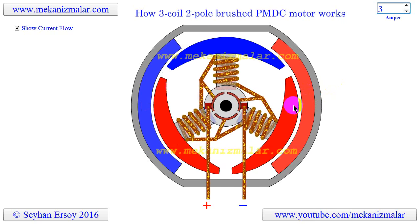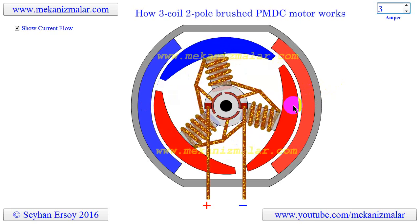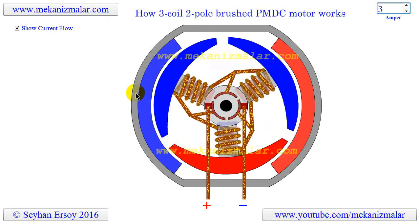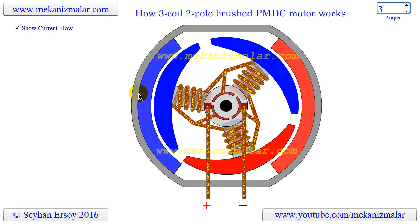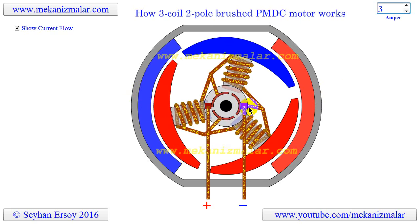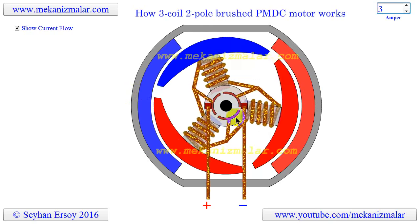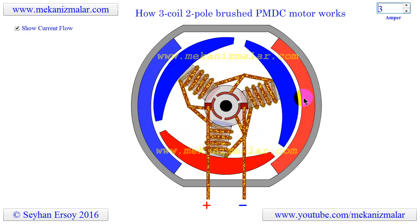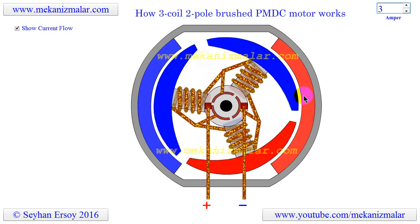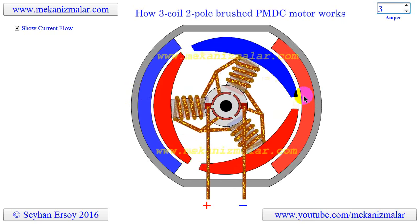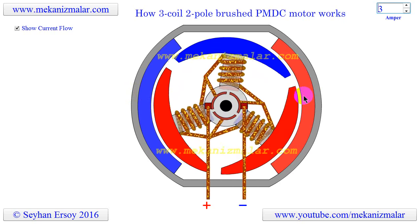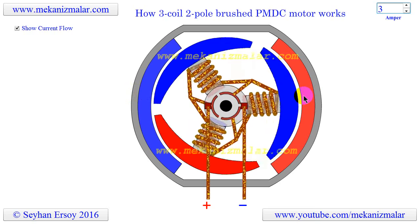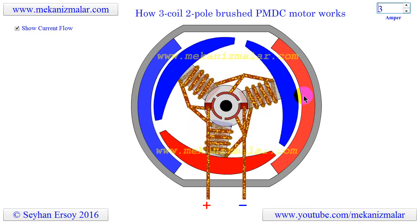In a typical DC motor, the stator is the fixed permanent magnet and the rotor is composed of a number of windings. One or two windings are activated at a time via commutation, depending on the number of coils on the rotor. Notice that in this animation the commutator has three gaps.